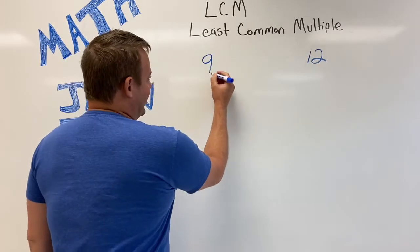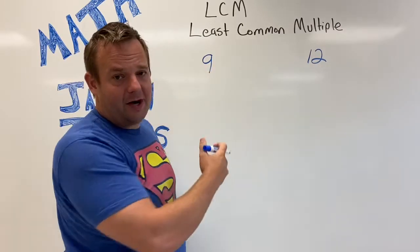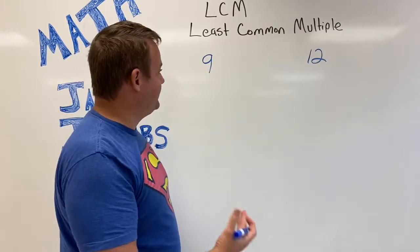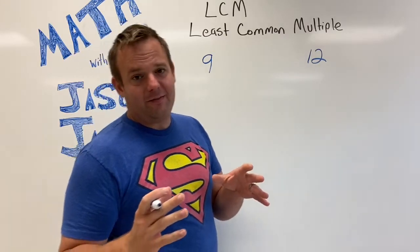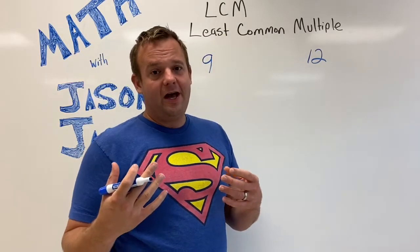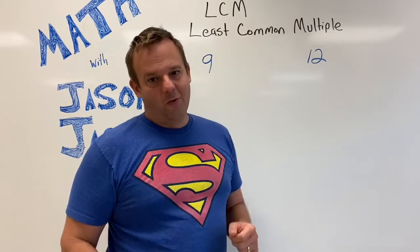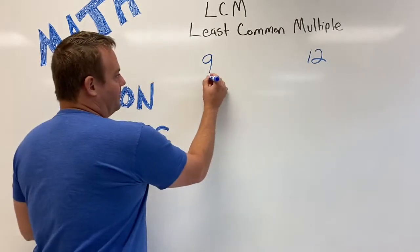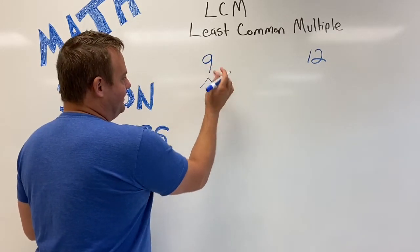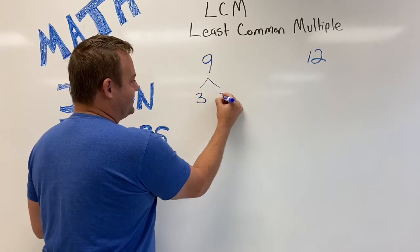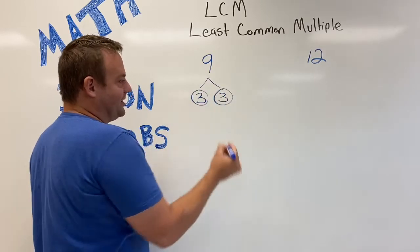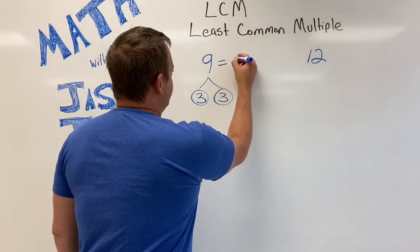9 is a composite number. A composite number will have three or more factors, and every composite number is made up of prime numbers which only have two factors, one and itself. So here we go: 9 factors down to 3 times 3. When they're prime I circle them, so 9 is 3 times 3. That's its prime factorization. You could also write it as 3 squared.